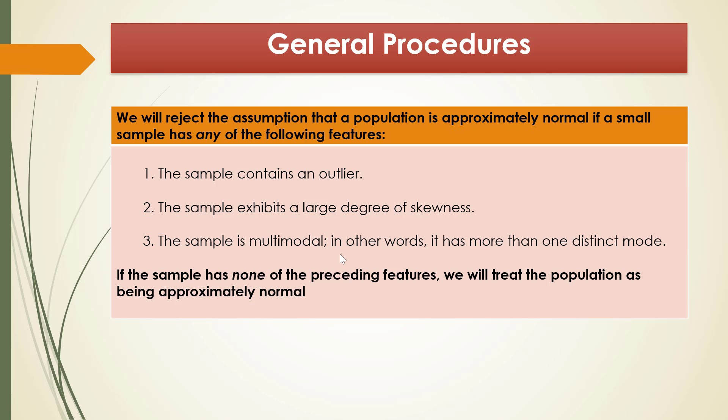The first feature: the sample contains an outlier. Number two: the sample exhibits a large degree of skewness. Number three: the sample is multimodal — in other words, it has more than one distinct mode. If the sample has none of the preceding features, we will treat the population as being approximately normal. So we have three features to be tested: outliers, skewness, and multimodality.